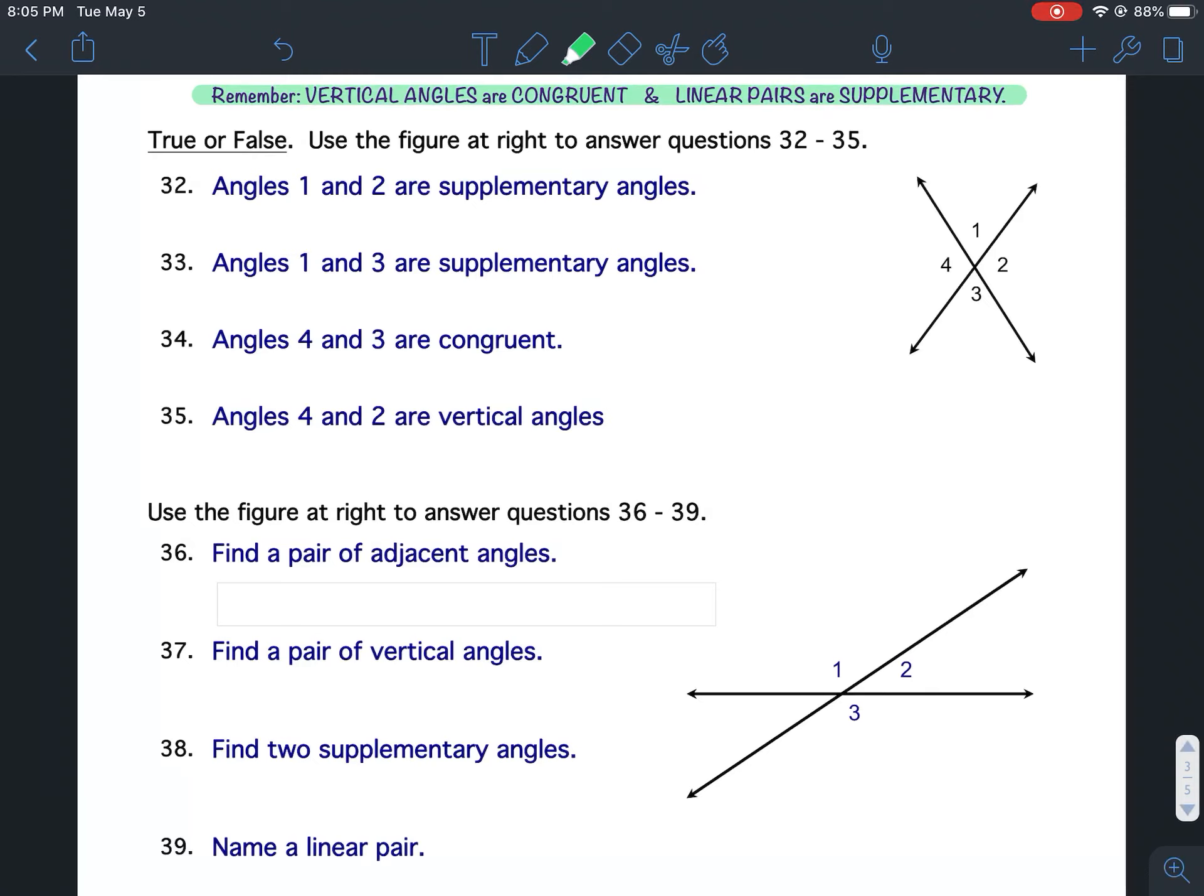Remember, vertical angles are congruent, linear pairs are supplementary. Vertical angles are congruent, linear pairs are supplementary. For example, one and three would be vertical angles.